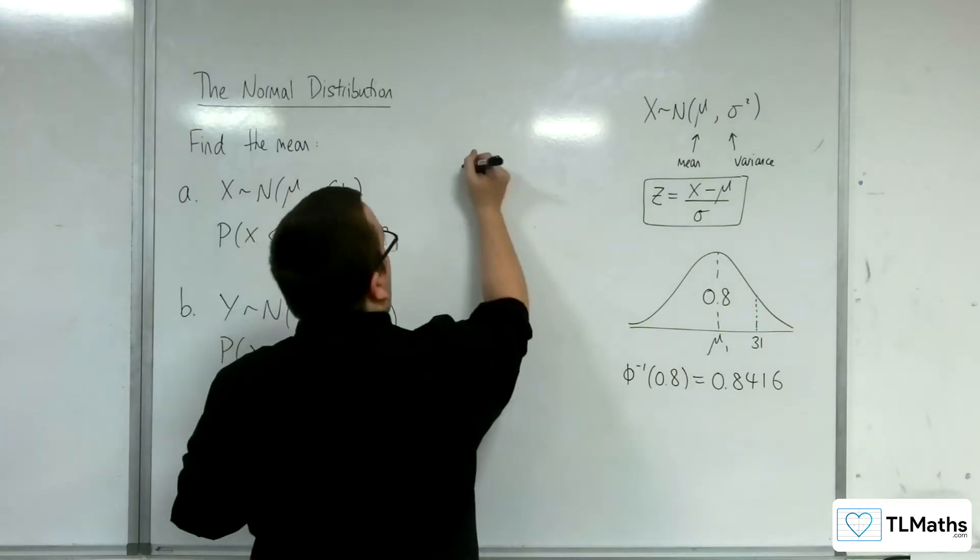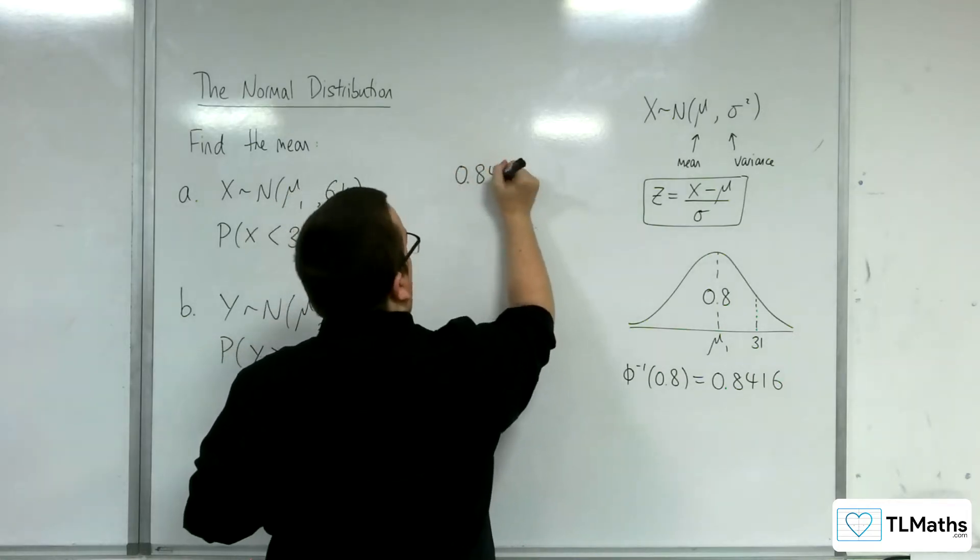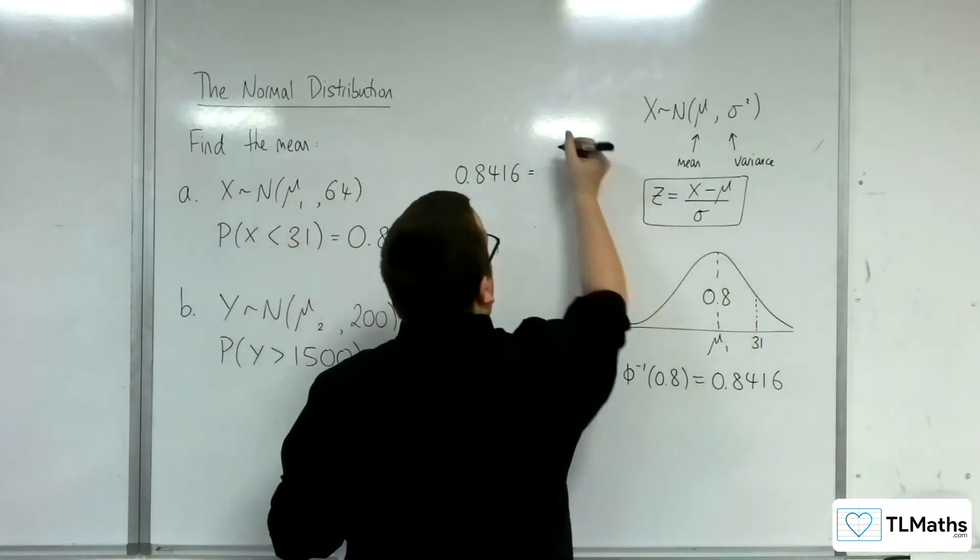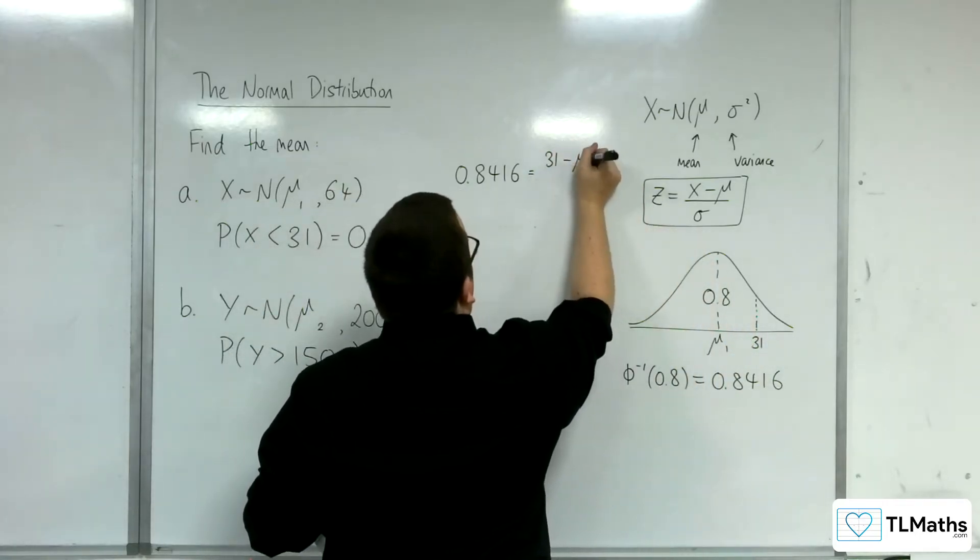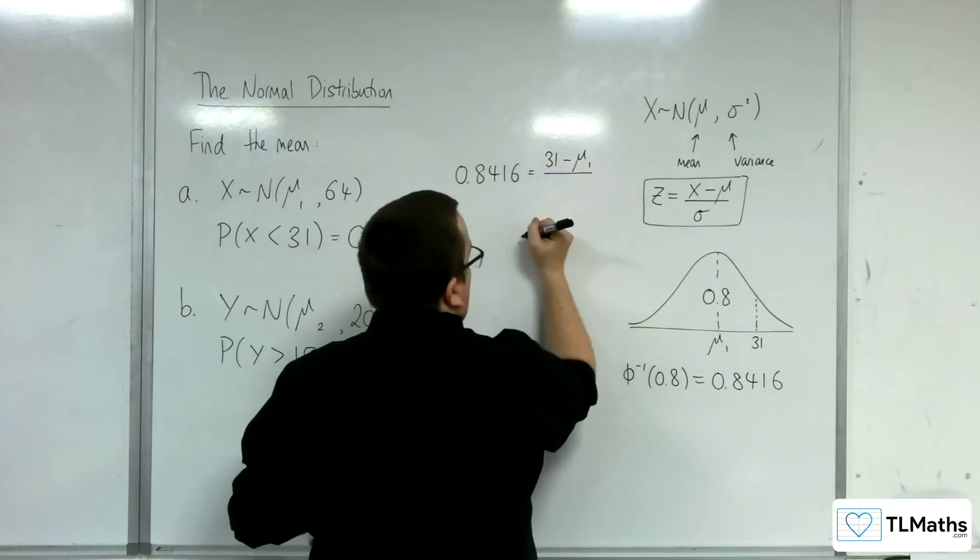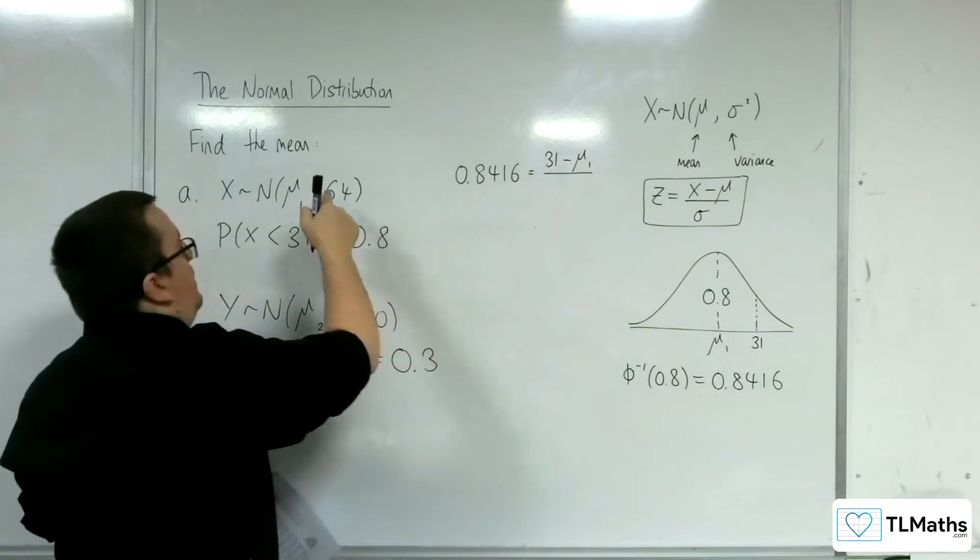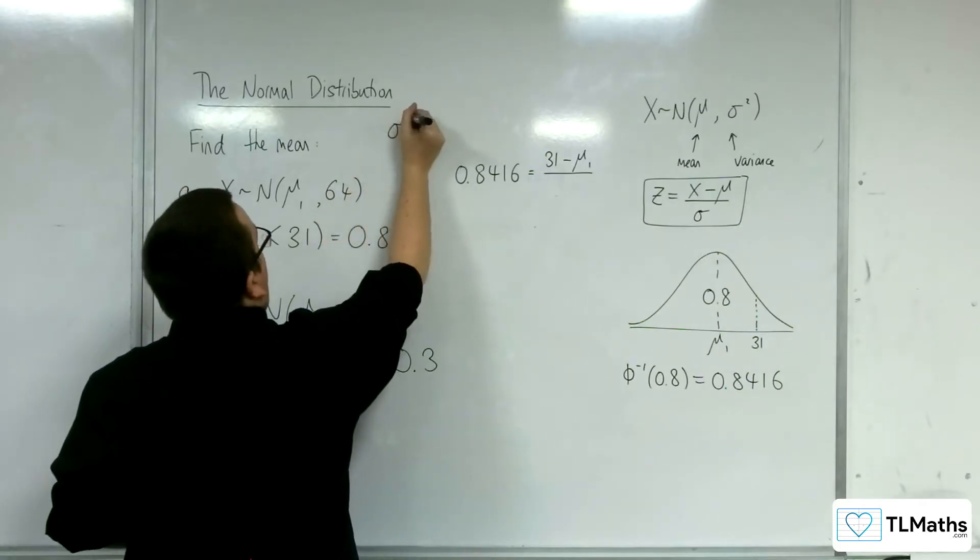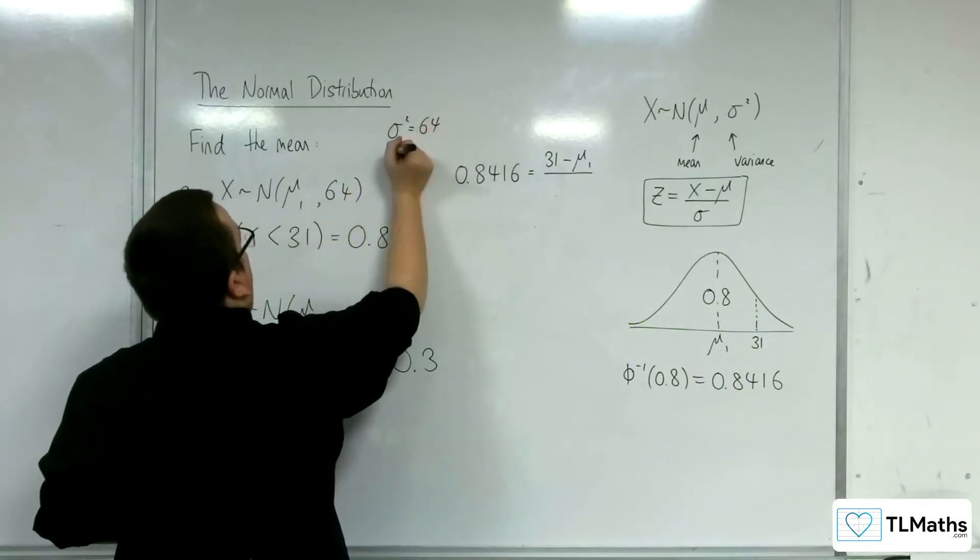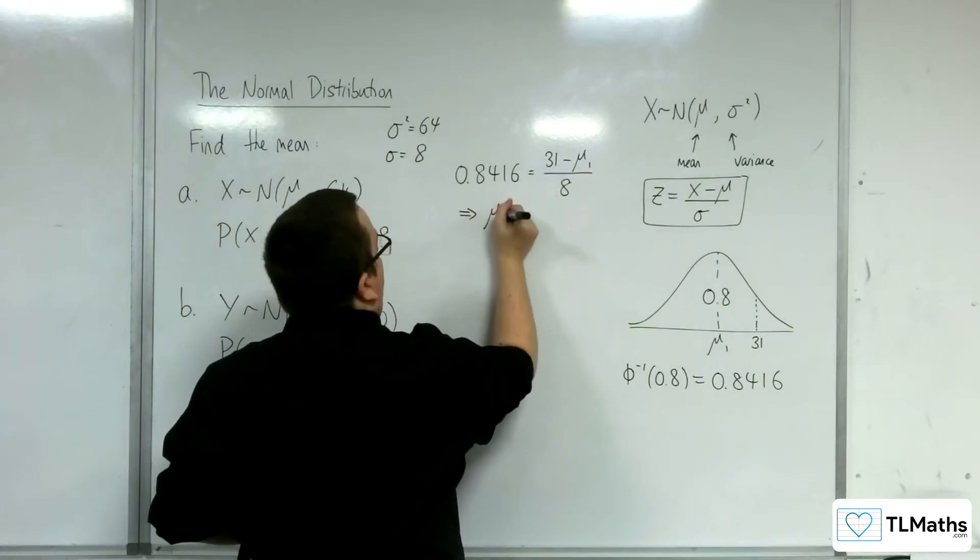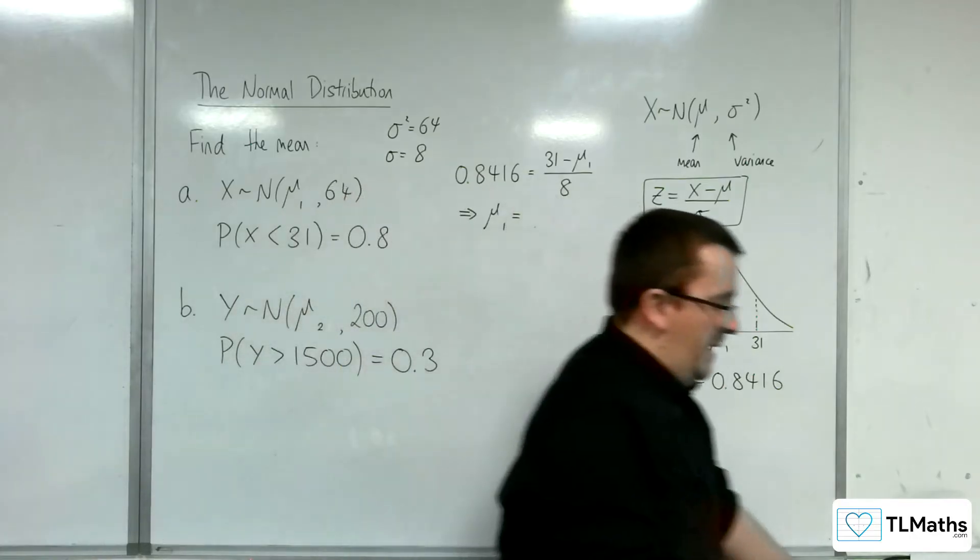So 0.8416 is equal to the x value, which is 31, take away the mean μ₁, divided by the standard deviation σ. So this, remember, is σ squared. That's 64. So σ is the square root of 64, which is 8. And this gives me an equation to solve to find the mean.